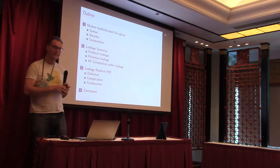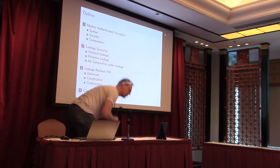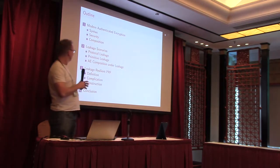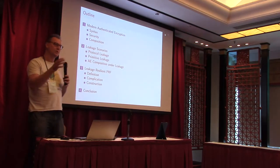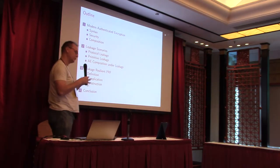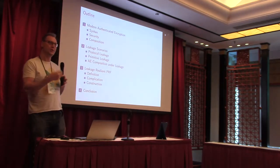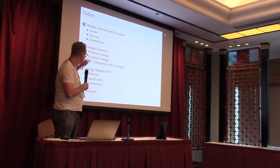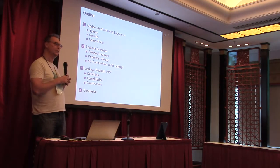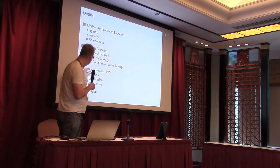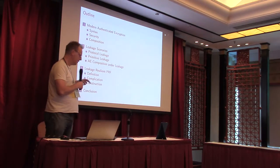This is the outline of the talk. We'll first look at what's known about modern authenticated encryption to set the scene. Then we'll look at the new leakage scenarios — protocol leakage, primitive leakage, and how composition under leakage works. And then there's the leakage-resilient PRF and the conclusion.